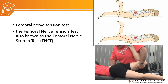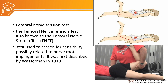The femoral nerve tension test — also called the femoral nerve stretch test — will be positive. It is used to screen for sensitivity possibly related to nerve root impingement and was first described by Wasserman in 1919. The patient lies prone and the knee is flexed; if tingling and numbness occur over the femoral nerve dermatome, nerve compression is suspected. Hip extension can be added; if no symptoms occur in that position, there is no nerve entrapment, but if tingling and numbness are reproduced, femoral nerve compression is confirmed.